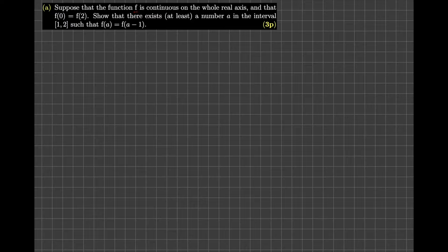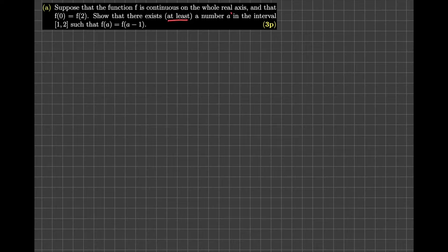We know that the function f is continuous on the whole real line. On top of that, we know that f of 0 is equal to f of 2. This means the height of the graph of the function f at x equals 0 is exactly equal to the height at x equals 2. We want to show the existence of at least a number a in the closed interval such that f of a is equal to f of a minus 1.